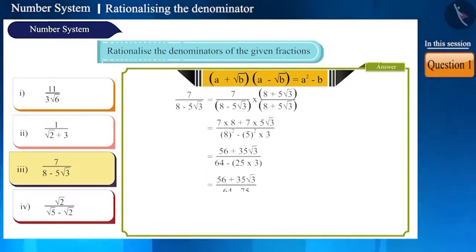Here, the numerator 7 will be multiplied by these two numbers: 7 multiplied by 8 plus 7 multiplied by 5 root 3. So in the numerator, we will get 56 plus 35 root 3 and in the denominator, we will get 8 square minus 5 square multiplied by 3 is equal to 64 minus 25 multiplied by 3, which is 64 minus 75 is equal to minus 11. So here, the denominator has been rationalized and the fraction will be 56 plus 35 root 3 by minus 11.